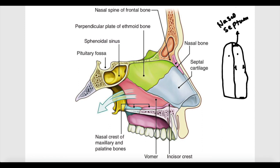The roof of the nasal cavity can be described as having an anterior part, a middle part, and a posterior part. The anterior part is composed of the inside of the nasal bones and the frontal bones. The middle part is composed of the horizontal plate of the ethmoid bone, also called the cribriform plate of the ethmoid bone.